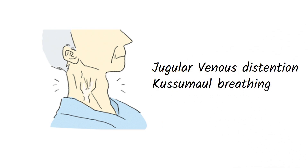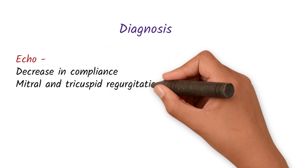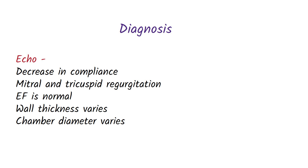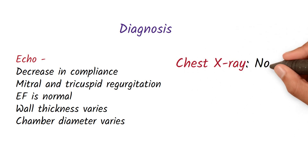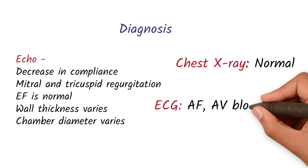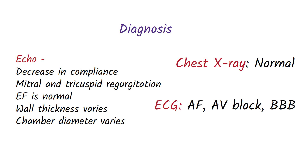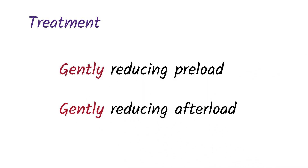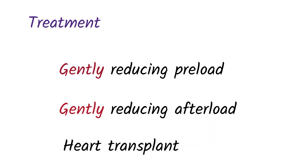For diagnosis of restrictive cardiomyopathy, echo shows decreased compliance, mitral and tricuspid regurgitation, and normal ejection fraction; wall thickness and chamber diameter may vary but any change would be mostly symmetric. Chest X-ray is normal. ECG shows atrial fibrillation, and due to fibrosis of the AV node and bundles, AV block and bundle branch blocks. Treatment involves gently decreasing preload with fluid restriction and diuretics, and gently decreasing afterload with ACE inhibitors, ARBs, hydralazine, and isosorbide dinitrate. Refractory cases require heart transplant.